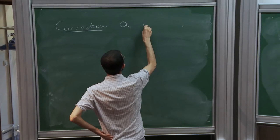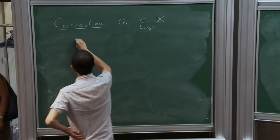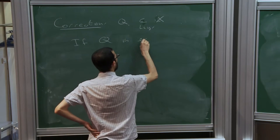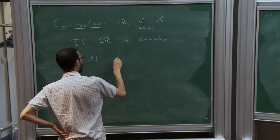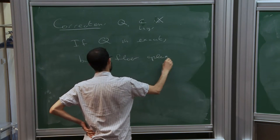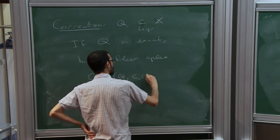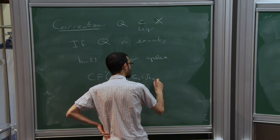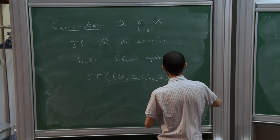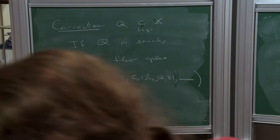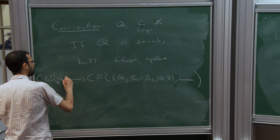Let Q be a Lagrangian in X. So if Q is exact, I explained that you can basically build some other complex of Q equipped with the local system of chains of the space of paths from the base point to any point. We can work with Z coefficients. This is CF* of this with itself, and there is a natural map from the chains on the base loop space at Q. This is an equivalence.